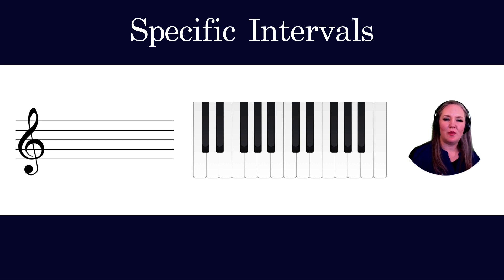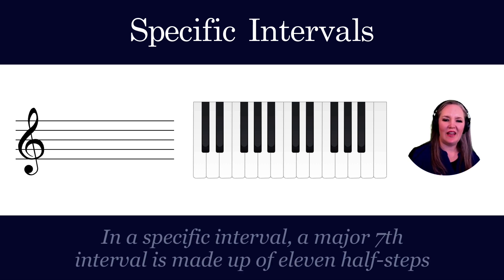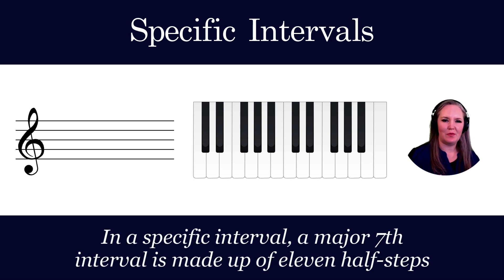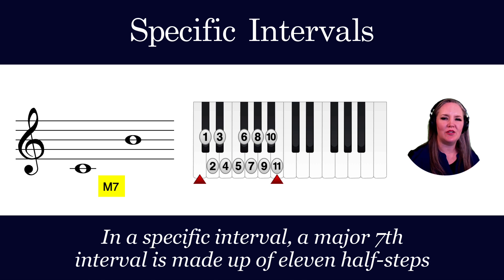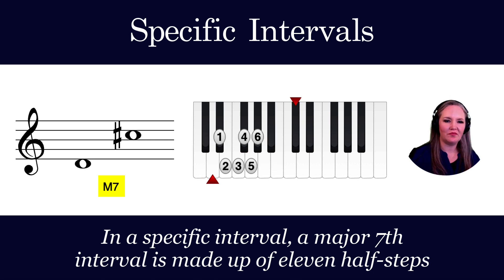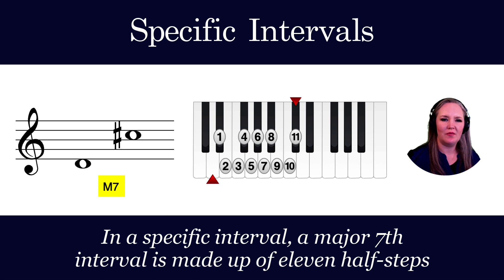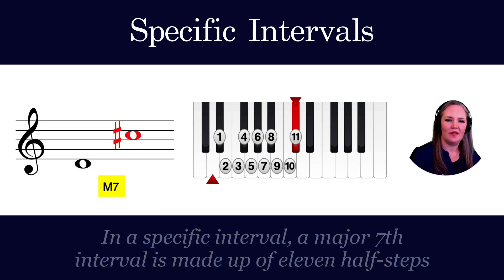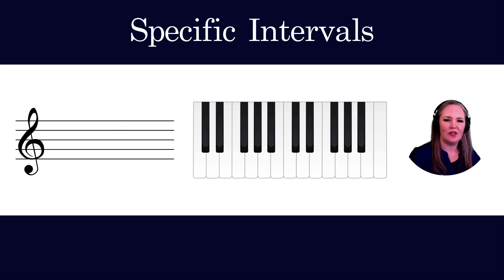A major seventh is made up of 11 half steps. So C to B is a major seventh. There are 12 half steps in an octave, by the way. D to C-sharp is also a major seventh.